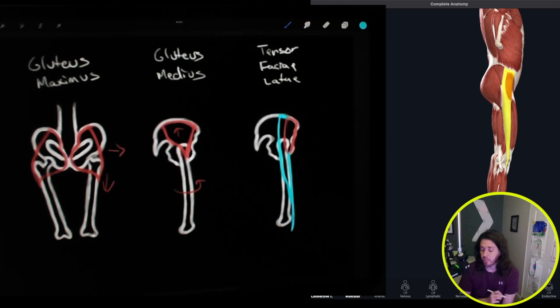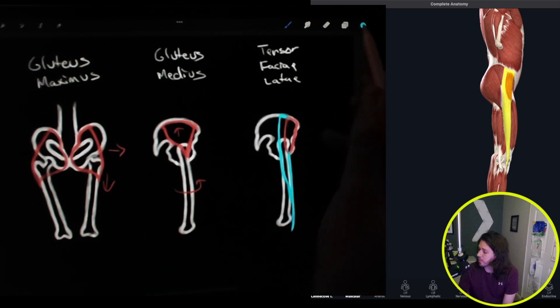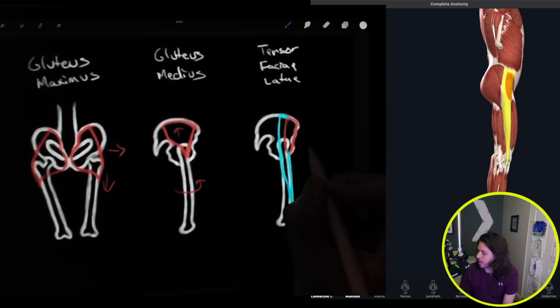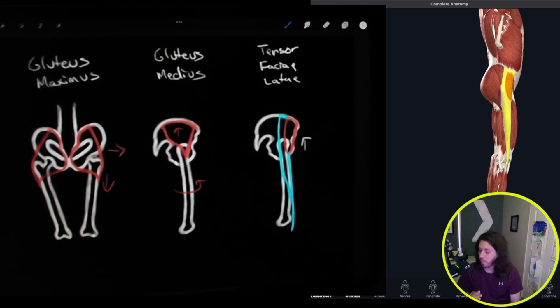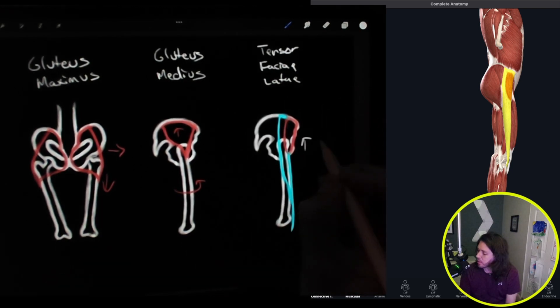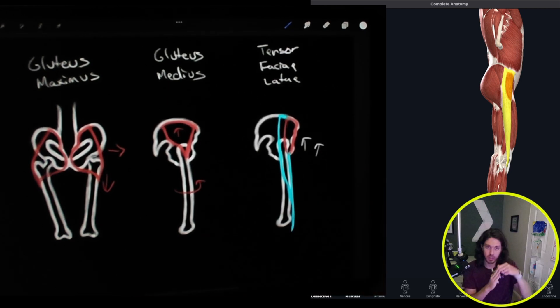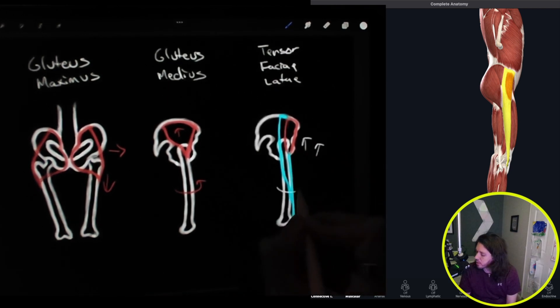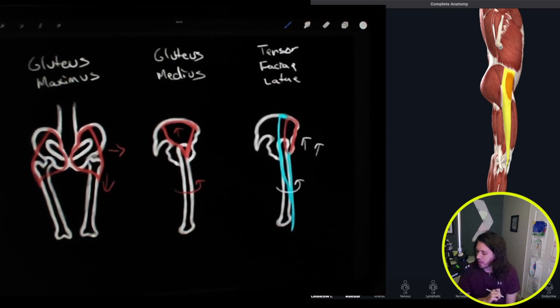So as far as movement, this one also does the abduction point. So it pulls the leg out. It also does flexion, which pulls the leg forward. And then it does rotation.